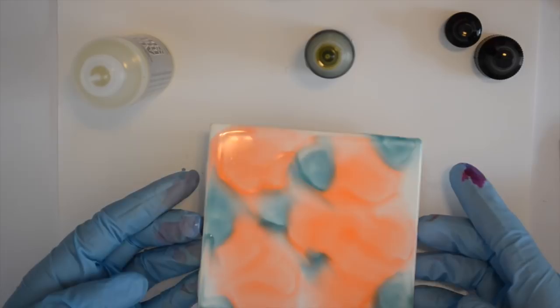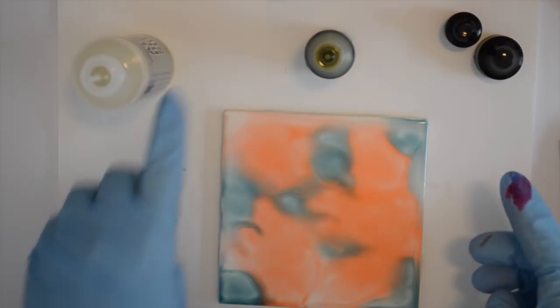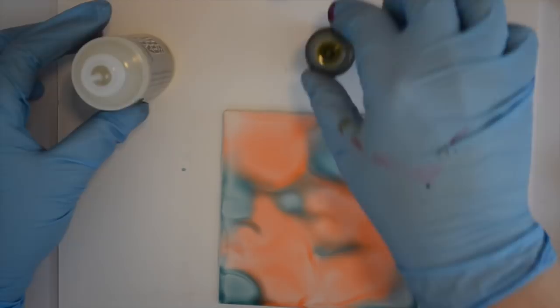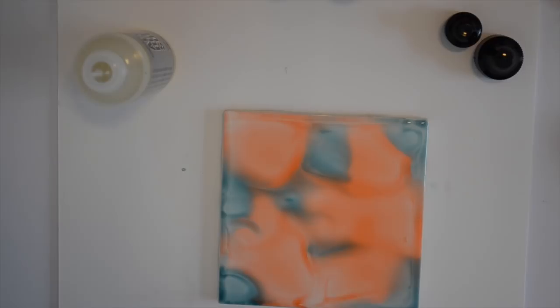You guys know that I don't use the blending solution a whole lot, but I just want to show you how it works here because it really does extend that dry time with your alcohol inks. I am using cloudy blue, salmon pink or shell pink, and willow. I've just dropped them in here along with that blending solution. You can see they're just kind of hanging out.